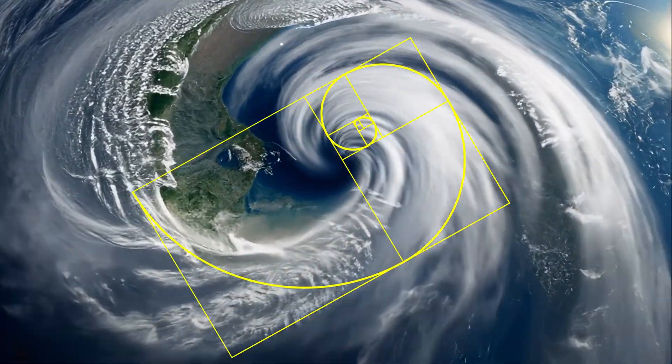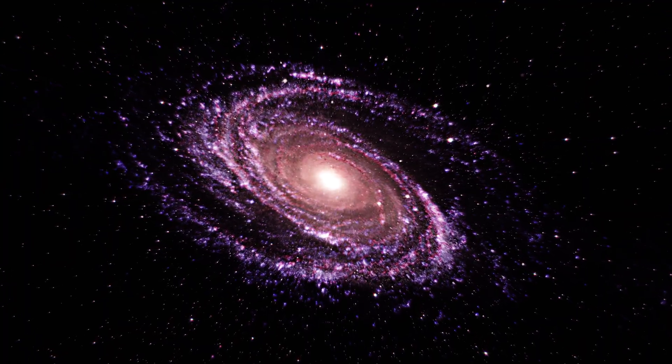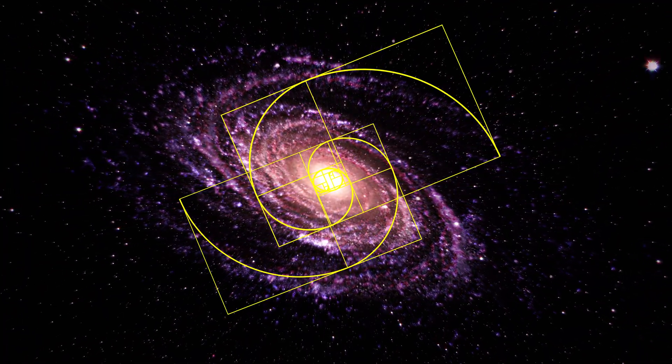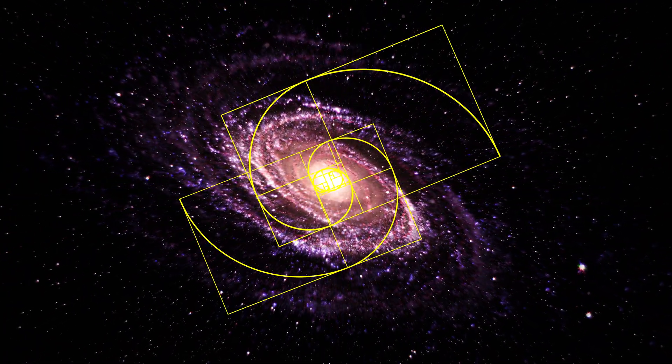When we look up at the sky, hurricanes and even our galaxy, it is in the spiral shape that matches the Fibonacci curve.